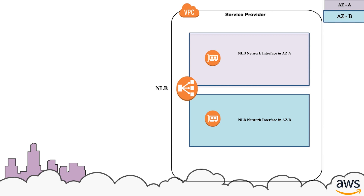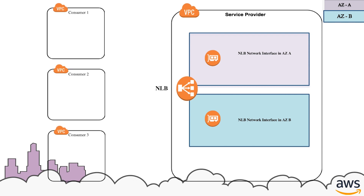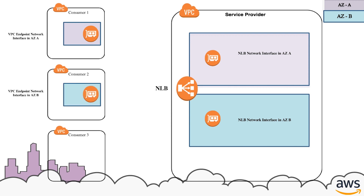Other AWS principals can create a connection from their VPC to your endpoint service using an interface VPC endpoint. Let's say that there are three endpoint consumers connecting to the endpoint service. Consumer 1 has enabled only AZ-A, so there is one endpoint interface in AZ-A. Consumer 2 has enabled only AZ-B, so there is one endpoint interface in AZ-B. Consumer 3 has enabled both AZs and thus has an endpoint interface in both AZ-A and AZ-B.